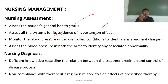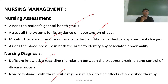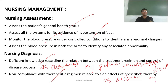The nursing diagnoses for hypertension include: first, knowledge deficit regarding the relation between the treatment regimen and control of the disease process, as evidenced by patient verbalization. Second, non-compliance with therapeutic regimen related to side effects of prescribed therapy, as evidenced by observation. These are written as three-part NANDA nursing diagnosis statements.